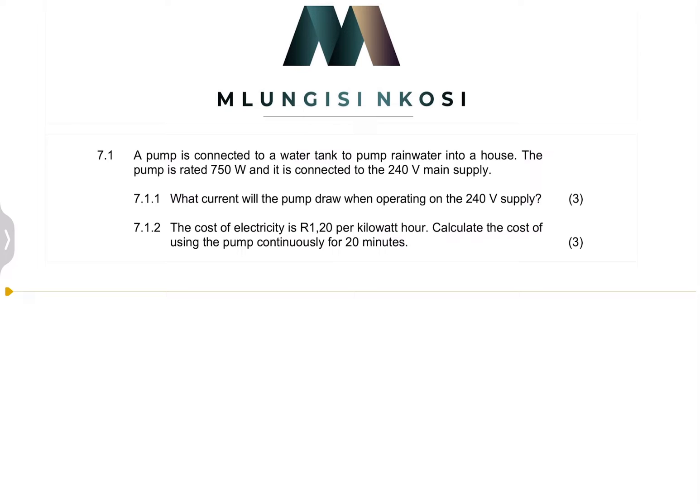So I've got a question here based on calculating the cost. It says a pump is connected to a water tank to pump rainwater into a house. The pump is rated 750 W and it is connected to the 240 V main supply. Now they want us to calculate what current will the pump draw when operating at 240 volts?